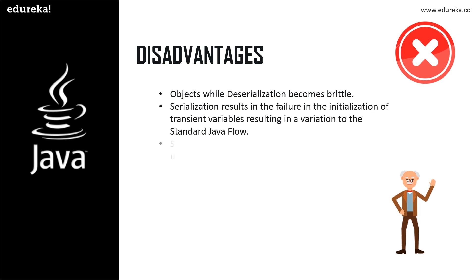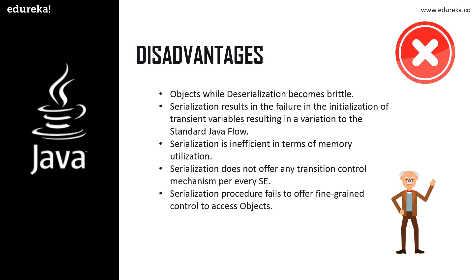Many critical technologies rely on the process of serialization. Now for the disadvantages: objects while deserialization become completely brittle and are not sure to be deserialized effectively. The declaration of transient variables while serialization creates memory space, but the constructor is not called, resulting in the failure of initialization of transient variables. The process of serialization is inefficient in terms of memory utilization. Serialization is not preferable for applications needing concurrent access without third-party APIs, as it does not offer any transaction control mechanism. Serialization also fails to offer fine-grained control to access objects.